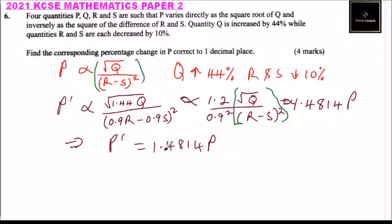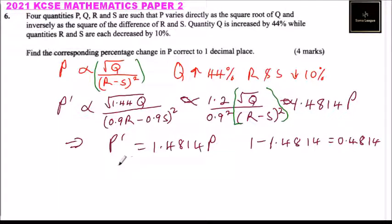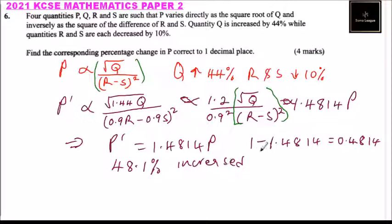In terms of percentage, 1.4814 minus 1 gives 0.4814, so P increased by 48.1%. Since 1 represents 100%, 1.4814 represents 148.1%, meaning P increased by 48.1%. That's how you do that question and you get 4 marks.